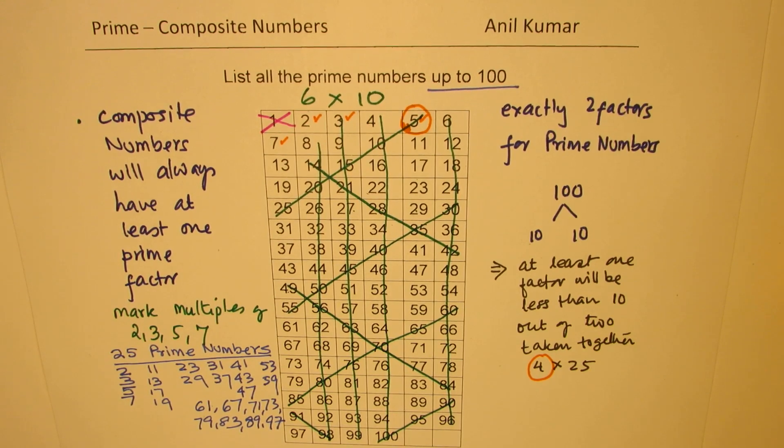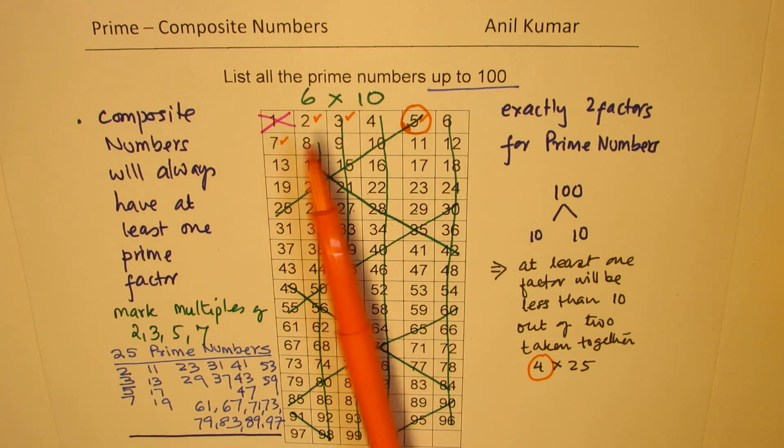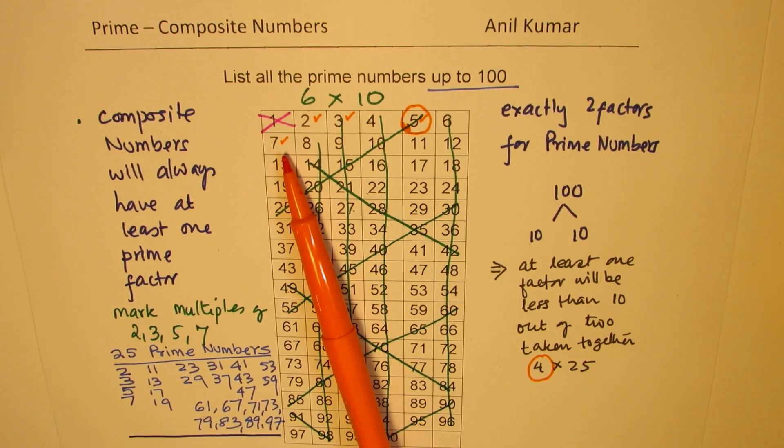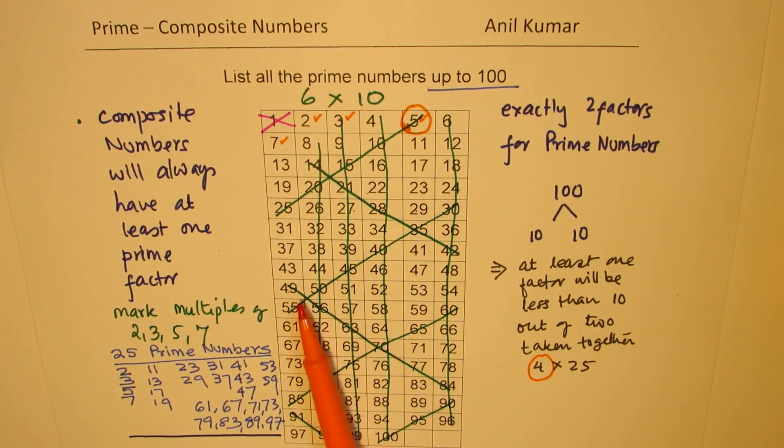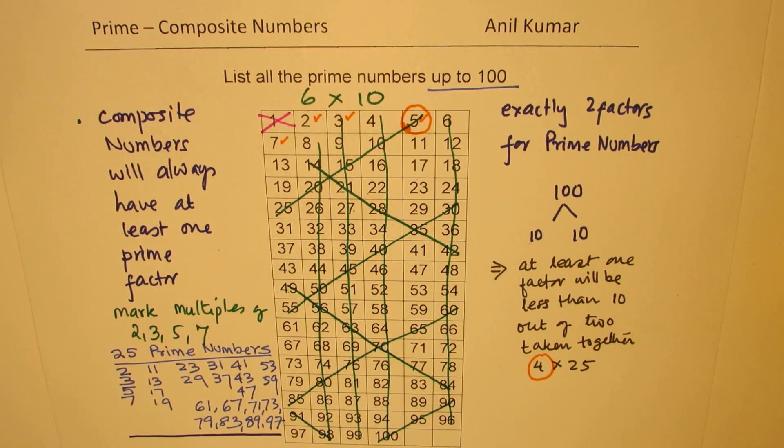That means we didn't miss any. So these are your 25 prime numbers. Is that very clear? So that is how we can actually find prime numbers without doing much calculations. So to find a prime number less than 100, we look into the multiples of prime numbers 2, 3, 5, and 7. All those multiples, when crossed out, we are left with the prime numbers. Perfect. And that is the prime numbers we are looking for.